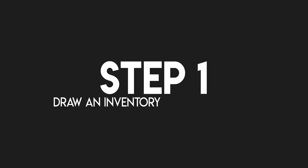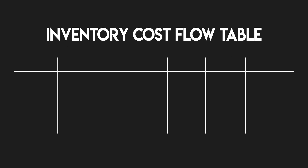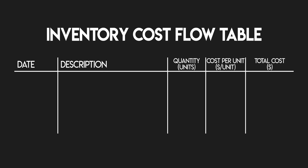Step one: draw an inventory cost flow table. This is a table made up of five columns: date, description, quantity, cost per unit, and total cost.